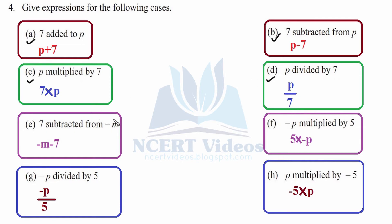E part: 7 subtracted from minus m. Initially we have minus m, and from that 7 is getting subtracted — therefore, we write minus m minus 7. F part: minus p multiplied by 5. The variable part is written first, and we are multiplying to it minus p — therefore, 5 into minus p. G part: minus p divided by 5. Division is simple — we write as it is: minus p is divided by 5. H part: p multiplied by minus 5 — therefore, minus 5 into p. This was question number 4.